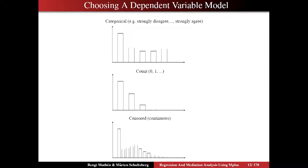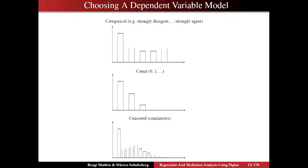This choice of model for the dependent variable — that is, the regression model that you want to use — faces us all the time. This choice is critical to get the right statistics and correct estimates. Throughout today, we're going to make decisions whether or not we want to go with categorical, count, or censored variables, and consider a couple of different considerations in that connection.